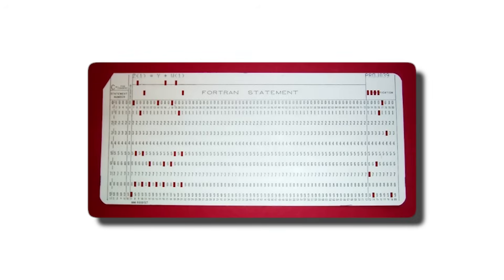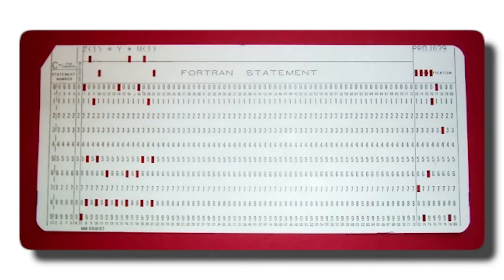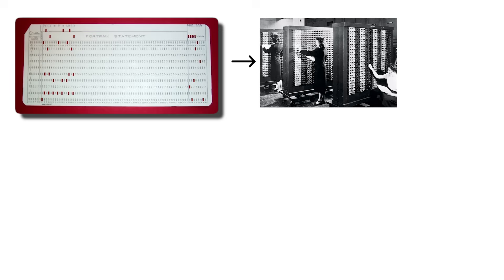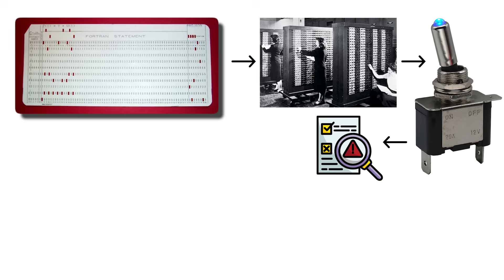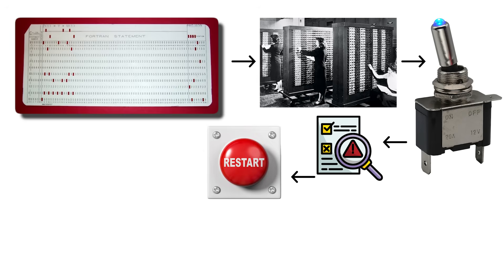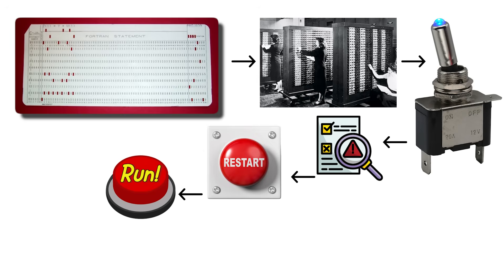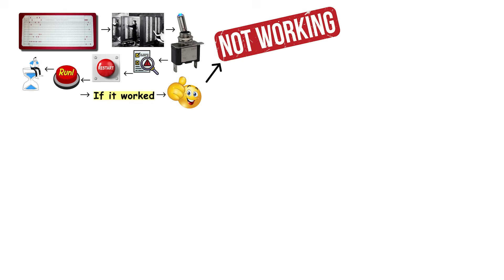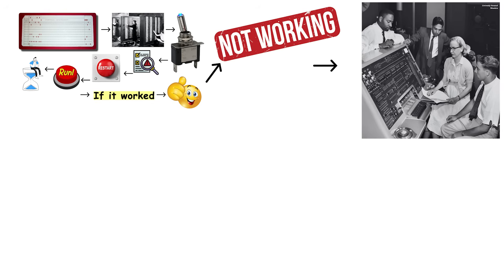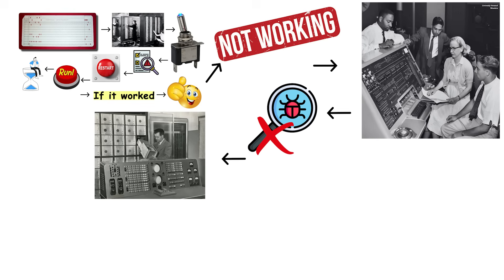You'd write your program on paper, convert it to binary by hand, then stand in front of this massive machine flipping hundreds of switches in the correct sequence. One mistake and you'd have to start over. Then you'd hit the run button and wait. If it worked, great. If it didn't, you'd have no idea why because there was no debugging.